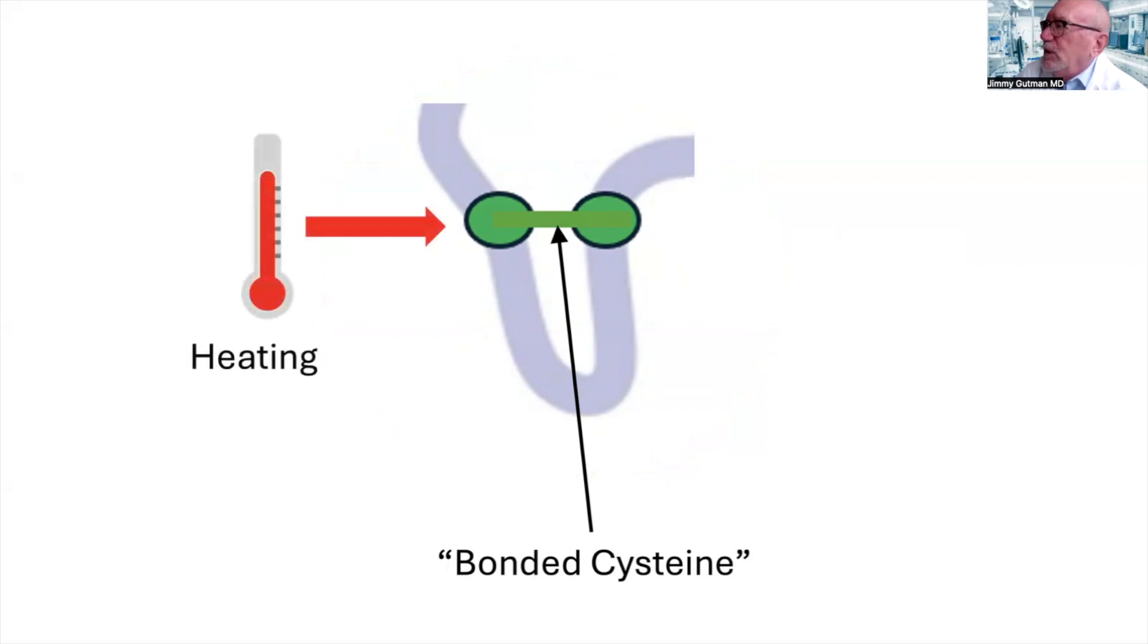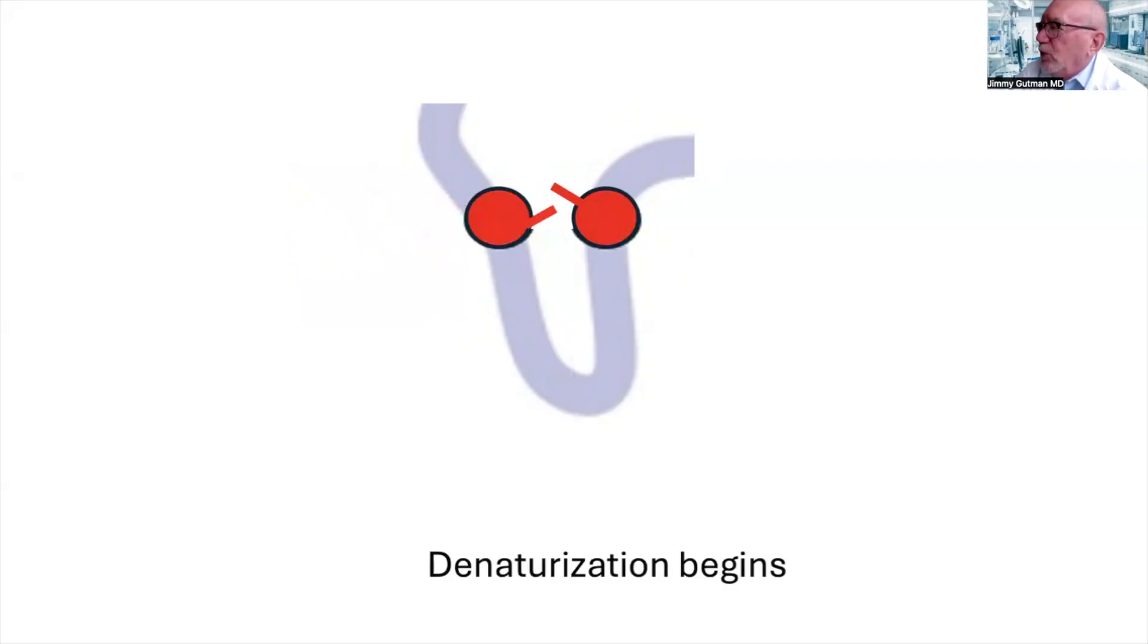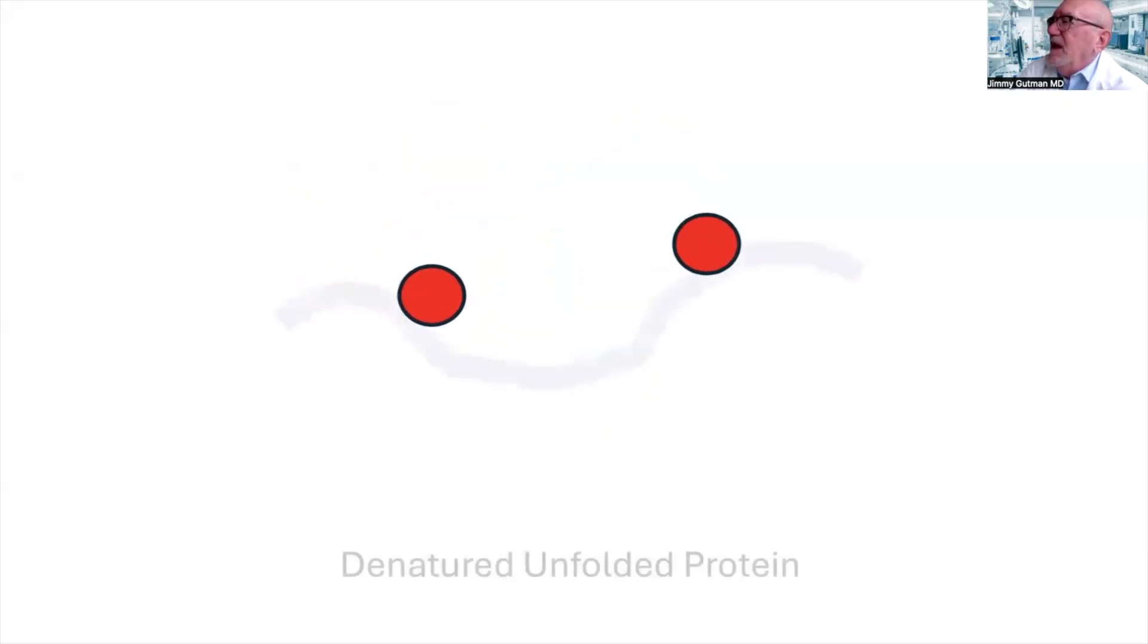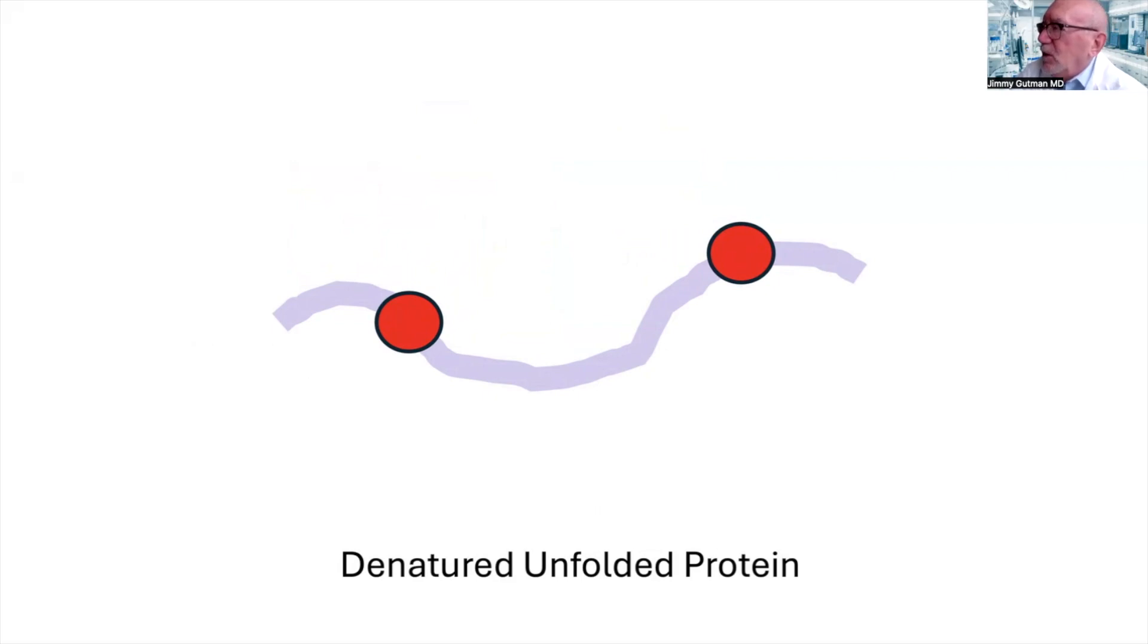Now what happens if we heat this protein up? Do you remember? Yes, this is a very sensitive bond. What we call a thermolabile bond. It's easily broken by the presence of heat. And once the bond is broken, the process of denaturization begins and you end up with an unfolded protein, which has lost its shape. And therefore, it's lost its biological activity to raise glutathione.